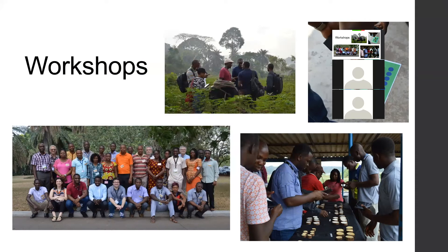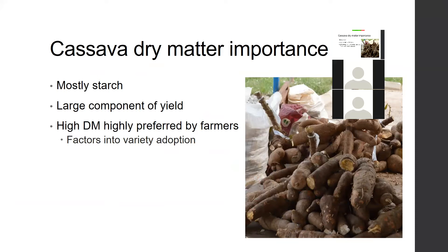One response we hadn't put much thought into before is dry matter content in cassava. Dry matter content is really important to cassava breeders, farmers, and consumers. Cassava roots are the harvested part of the plant — they're mostly starch, and the dry matter is what is actually cared about. Dry matter is a large component of yield, used as a proxy for eating quality, and is really important for farmers, which factors into variety adoption, as they want to grow crops that can be consumed and used for processing.